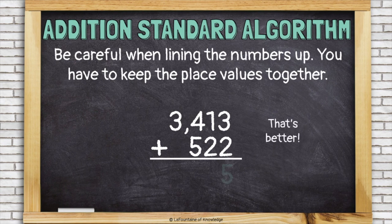Now we can add them together. Adding the ones, three plus two is five. Add the tens, one plus two is three. Add the hundreds. I have four hundreds in the top number and five hundreds in the bottom, and that's nine hundreds. And then I have three thousand plus I don't have any thousands in my bottom number, so it's still just three thousand.